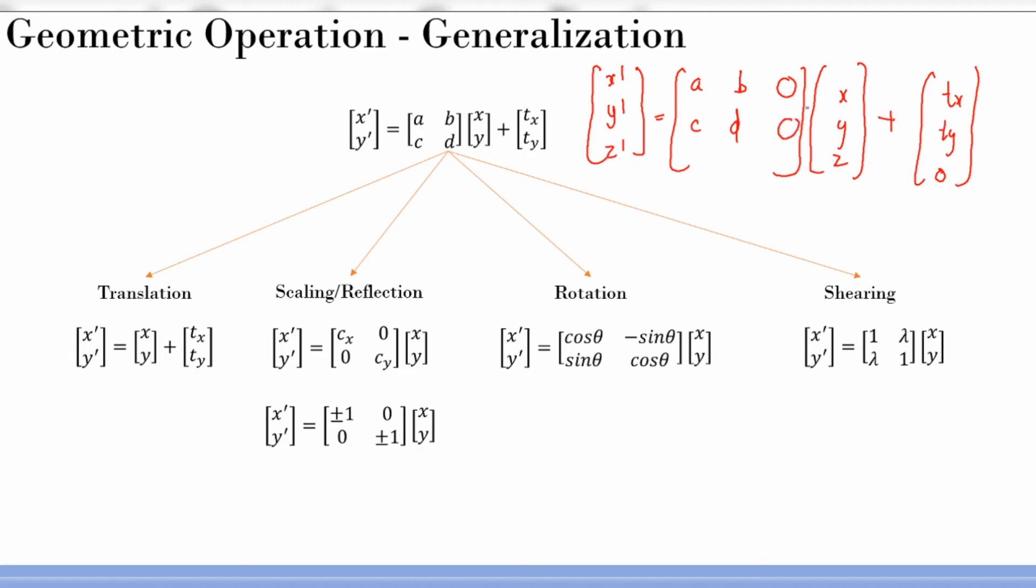Now z dash is - I am not going to do a projective transformation, affine transformation. So I have to be here right. 0 into x plus 0 into y, no x and y components. Z is unchanged. So z dash is 1, z dash is z itself.